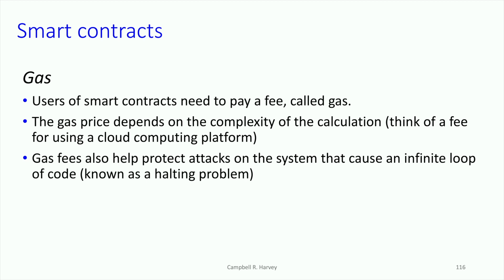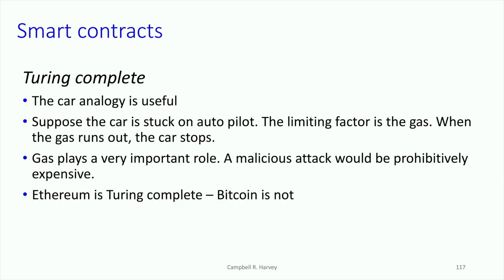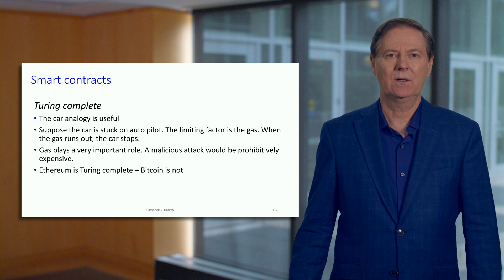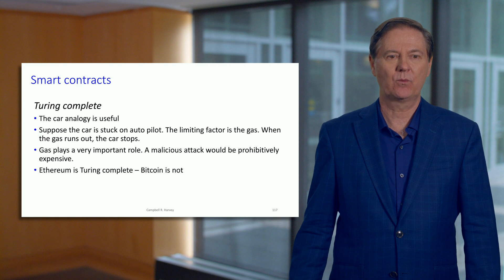There's another reason to have gas, and that is the problem of the infinite loop of code, sometimes known as the halting problem. Think of a self-driving car stuck on autopilot with nobody in it — it just goes. What is the limiting factor? Gas. When it runs out of gas, the car stops.